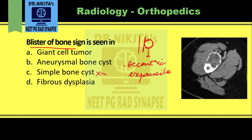Knowing it is an eccentric lesion rules out option C — simple bone cyst (unicameral bone cyst) — because simple bone cyst is generally in a central location. In the bone, the simple bone cyst sits in the center, it is not eccentric. So simple bone cyst is out.